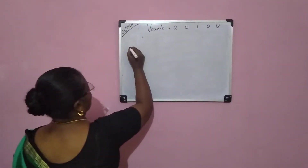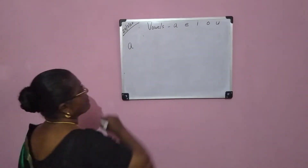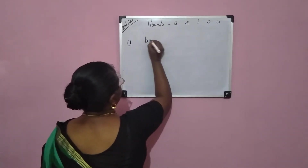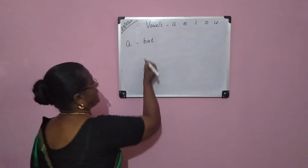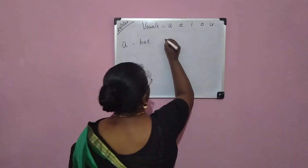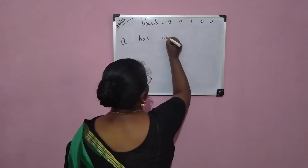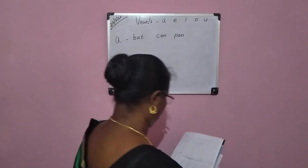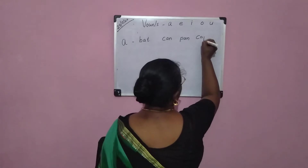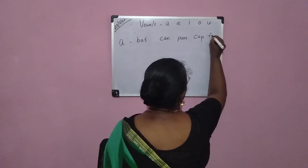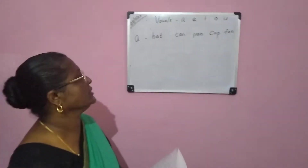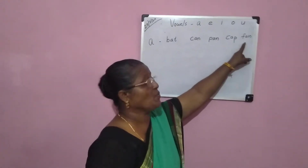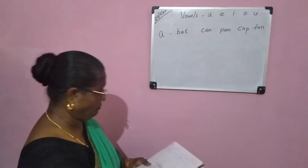A vowel sound. Words with the A vowel sound: can, pen, cow, fan. Can, pen, cow, fan. A vowel. Next.